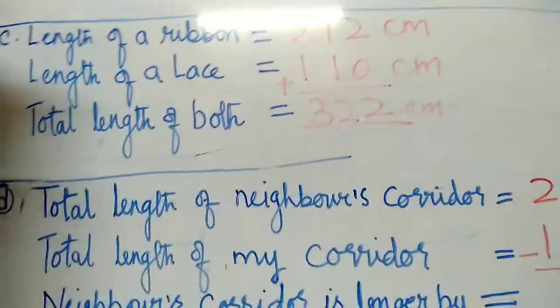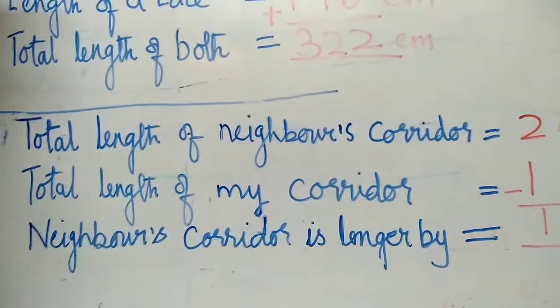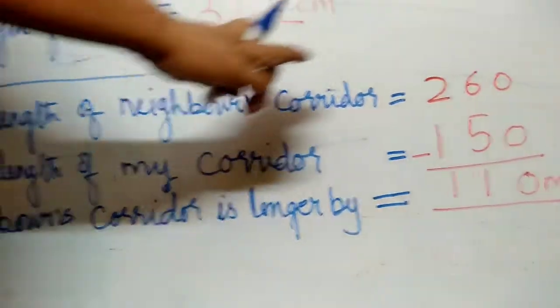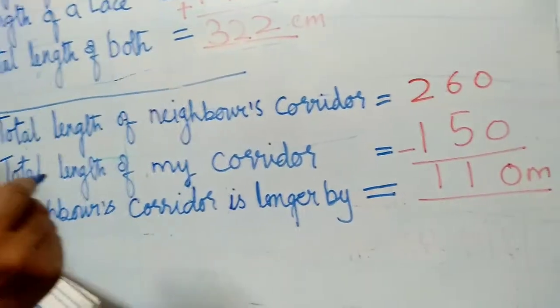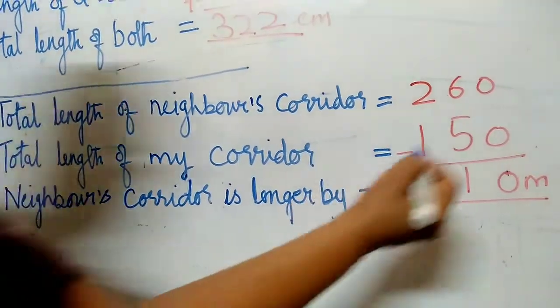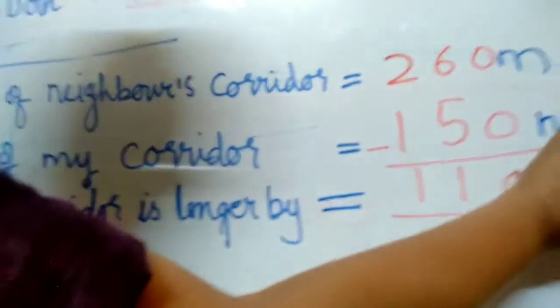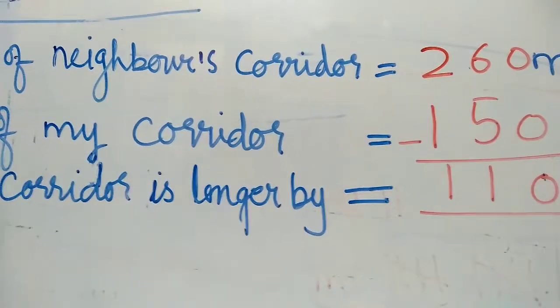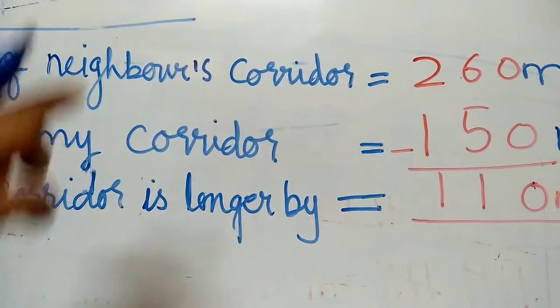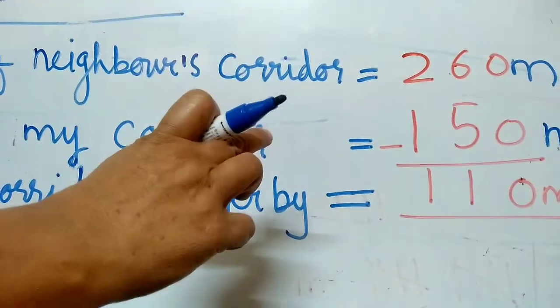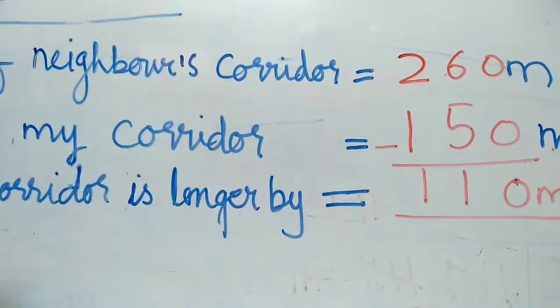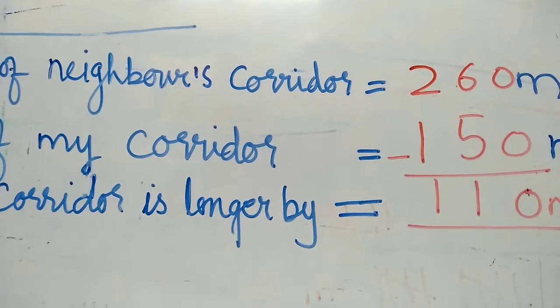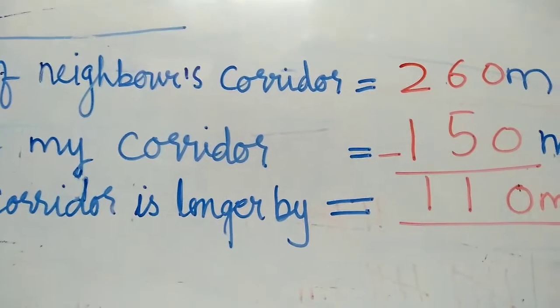Next, the length of my corridor is 150 meters and length of my neighbor's corridor is 260 meters. Which corridor is longer? Neighbor corridor is 260 meters and my corridor is 150. Corridor means open hall. So whose is longer means, if you minus from neighbor's, neighbor's is 260, mine is 150. If you minus, you will get 110 meters length. Which corridor is longer means, neighbor's corridor is longer by 110 cm.